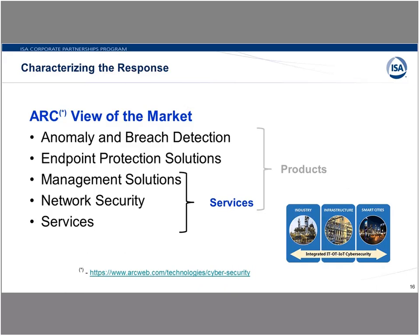I want to take a brief moment to talk about one view of the market from the ARC Advisory Group, a research and consulting company in the U.S. They recently published a series of market studies on industrial cybersecurity and broke the space down into categories: anomaly and breach detection, endpoint protection, management solutions, network security, and services. These are a mix of product and service responses, and collectively they address the breadth of the cybersecurity market.